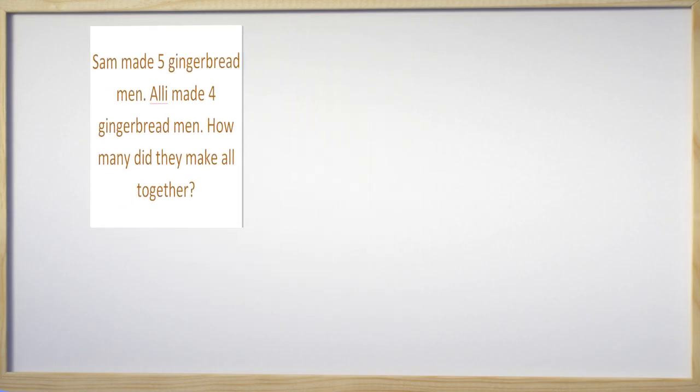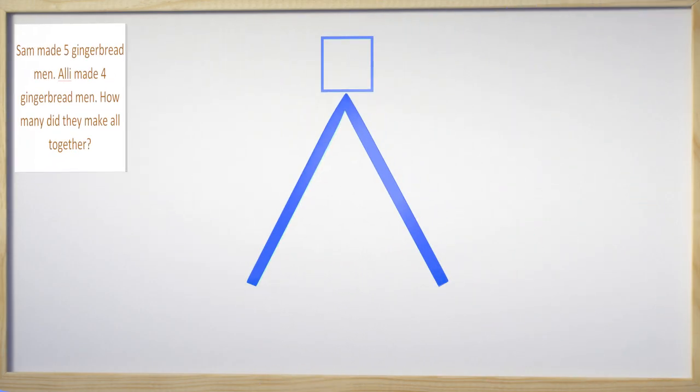I am going to start with a math mountain because I like those. We know that Sam had five gingerbread men and Allie had four, but we do not know how many they had all together. So the total up top is what we do not know and this box shows we are trying to find the unknown number. We do know the two partners.